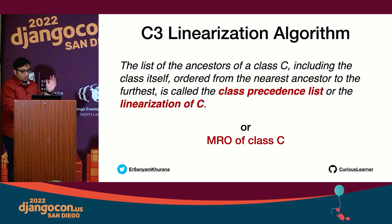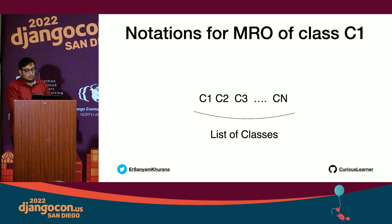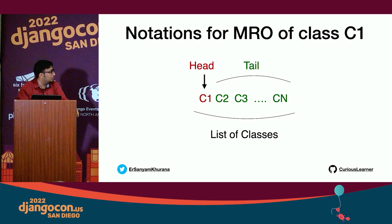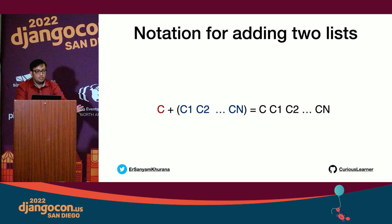Before learning what C3 is all about, let's look at the notation. We'll use asymptotic notation to write the algorithm. Given a list of classes C1 through Cn, the very first class is always the head of the list. If the list has just one class, it has no tail. Classes C2 through Cn form the tail. To add a class C to an existing list, we write it in asymptotic notation to depict how the search happens.